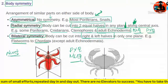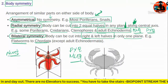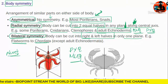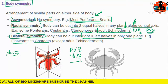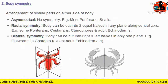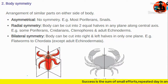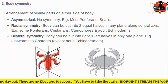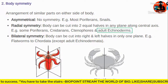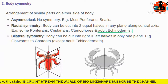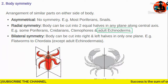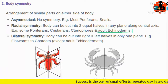If the question asks which organism's body can be cut into two equal halves along any plane through the central axis, the answer is radial symmetry. In the exam, they will likely give options like adult echinoderms or ctenophores rather than asking directly. So study the examples carefully.